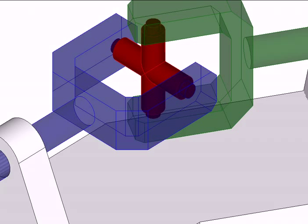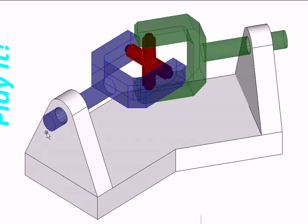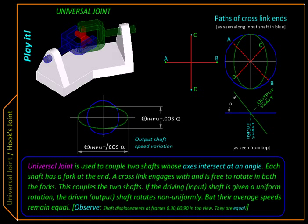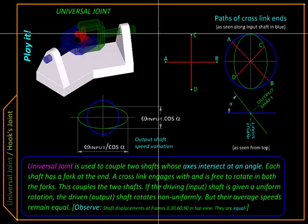The motion is then transferred from the input shaft to the input fork, to the cross link, to the output fork, and finally to the output shaft. Let us take a closer look at this motion transfer.